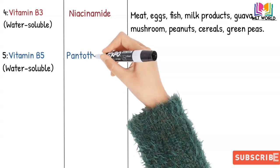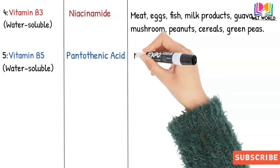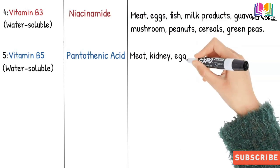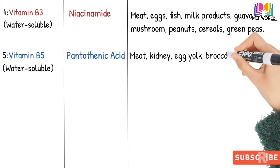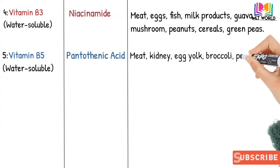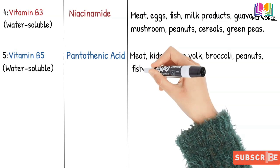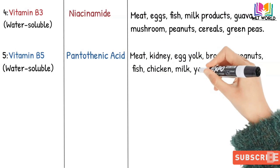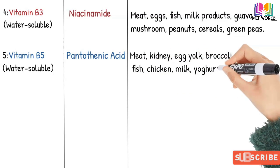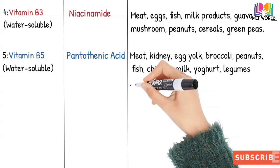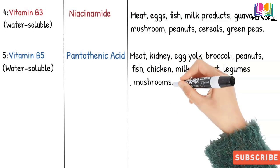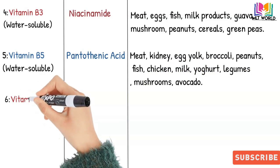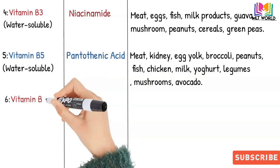Next is Vitamin B5, which is also water-soluble. Its scientific name is pantothenic acid. Sources include meat, kidney, egg yolk, broccoli, peanuts, fish, chicken, milk, yogurt, legumes, mushrooms, and avocado.